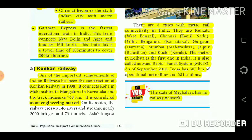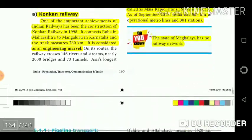The 8 cities with metro rail connectivity are: Kolkata (West Bengal), Chennai (Tamil Nadu), Delhi, Bengaluru (Karnataka), Gurgaon (Haryana), Mumbai (Maharashtra), Jaipur (Rajasthan), and Kochi (Kerala). The metro in Kolkata is the first one in India and is also called the Mass Rapid Transit System (MRTS). As of September 2018, India has 507 km of operational metro lines and 381 stations. The state of Meghalaya has no railway network.